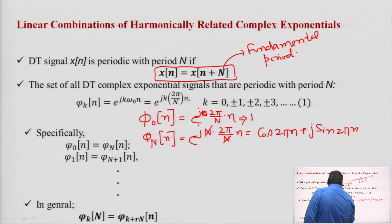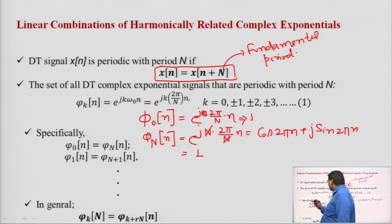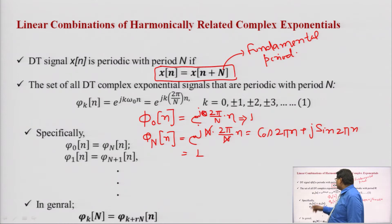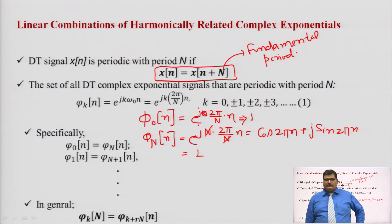Similarly, if you put k = 1, then k = 1 and k = N + 1 give the same result. So φ₁(n) = φ_{N+1}(n). This is the basic concept.